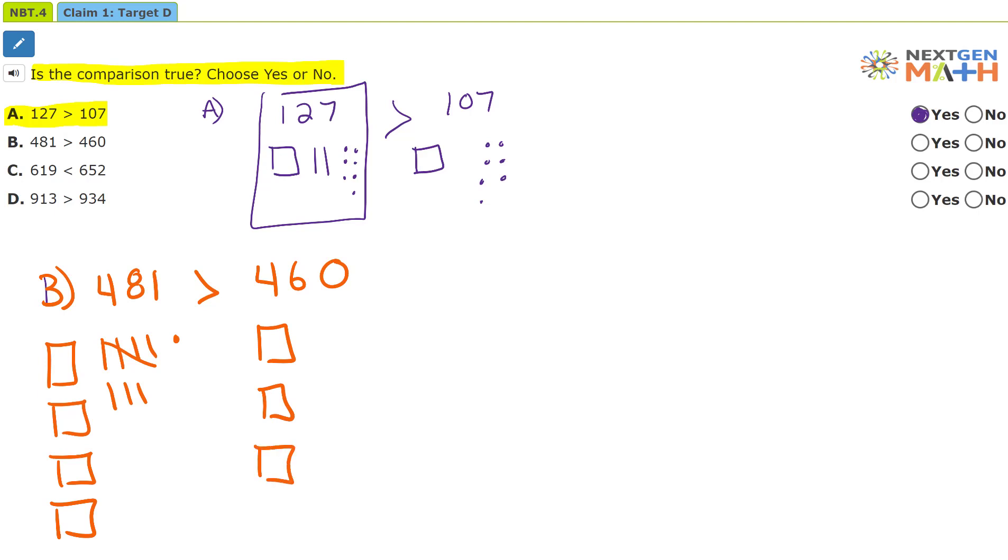Here are the 400s, or the four flats. Here are the six tens, and there's no ones. Well...